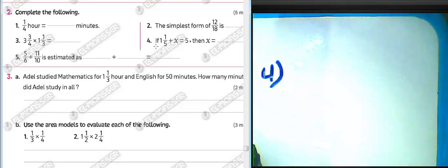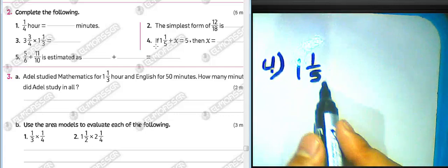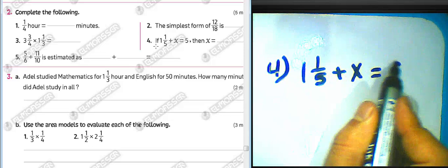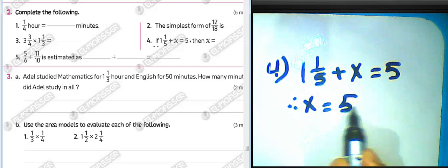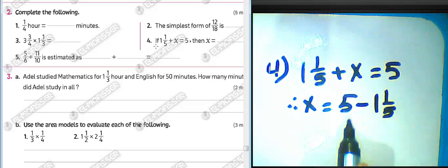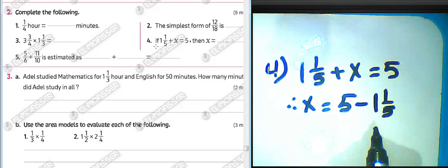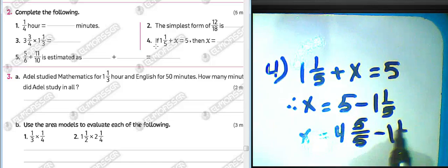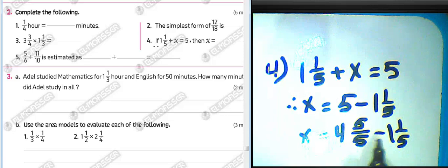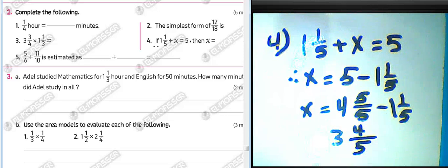Question number four: if one and one over five plus x equals five, then x equals what? We subtract one and one over five from five. Five minus one equals four, five minus one equals four, so four over five remains. The answer is three and four over five.